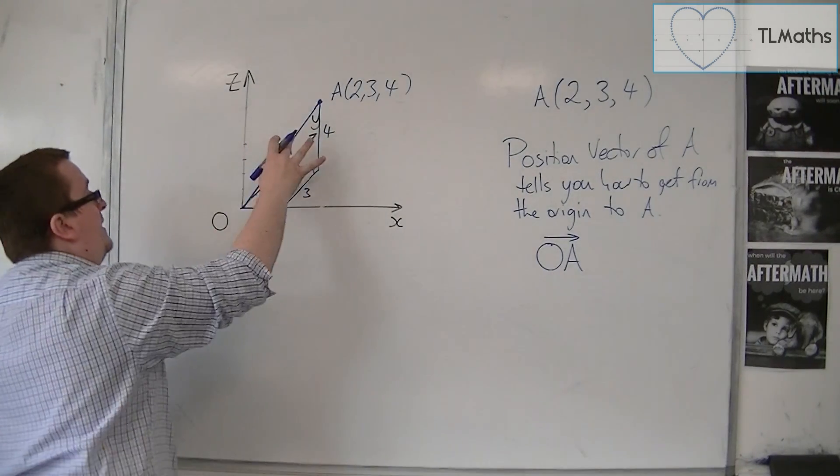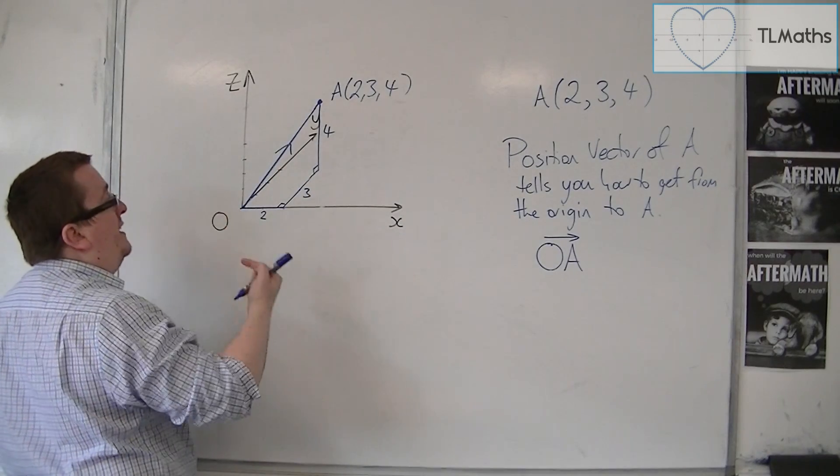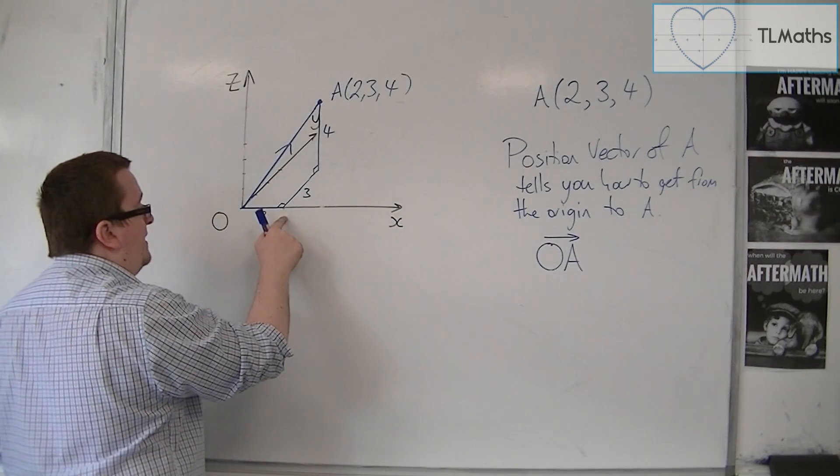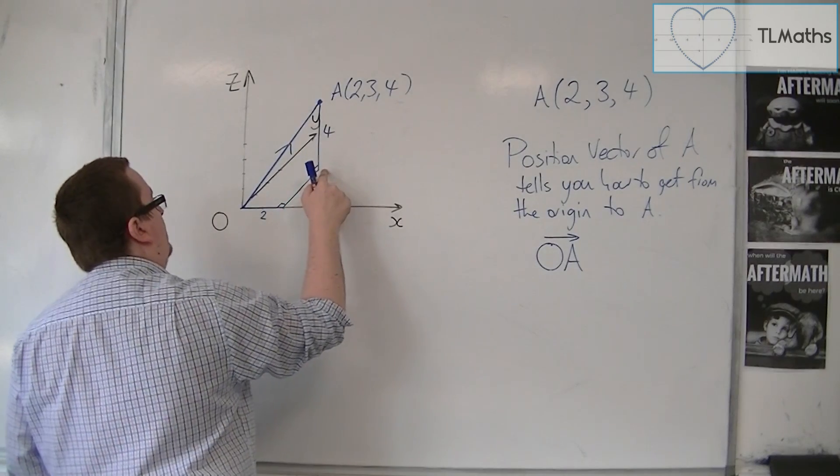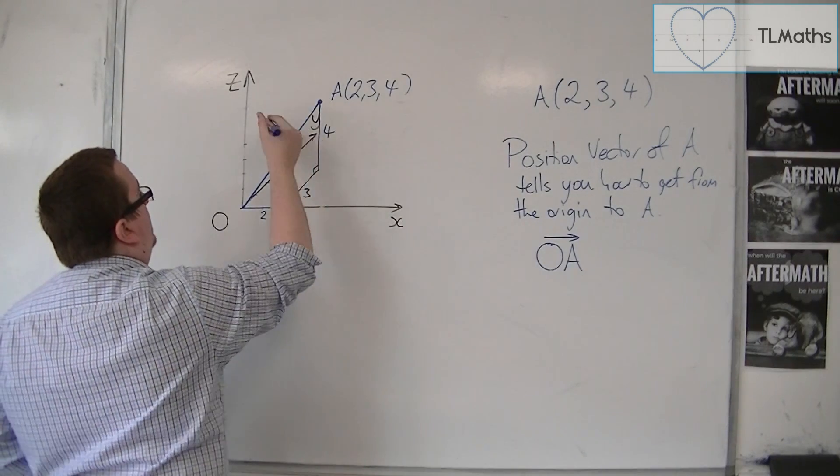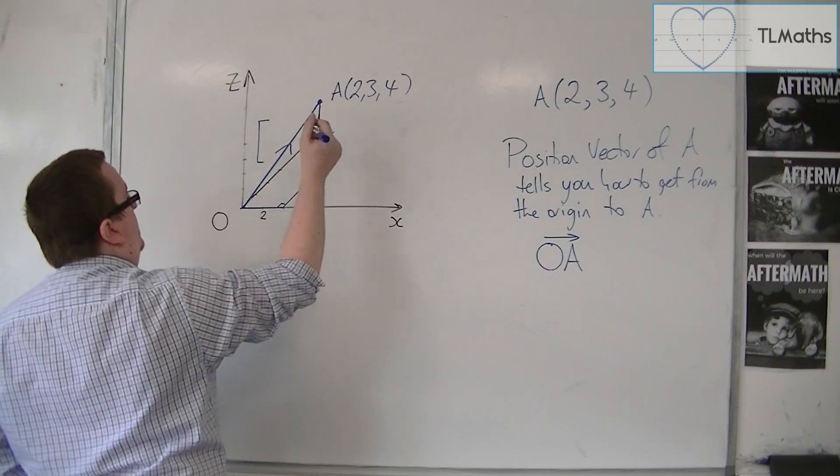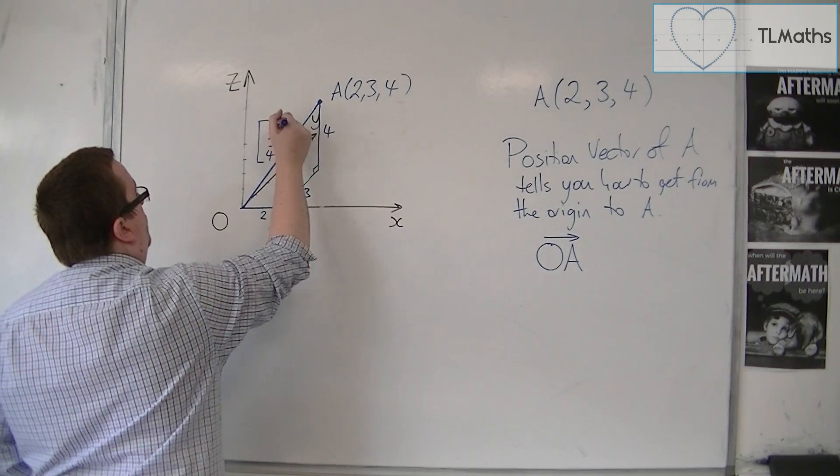And this vector is given by, well, in order to get to A, I need to go 2 along the x-axis, 3 along the y-axis, and 4 up the z-axis. So it is a vector given by 2, 3, 4.